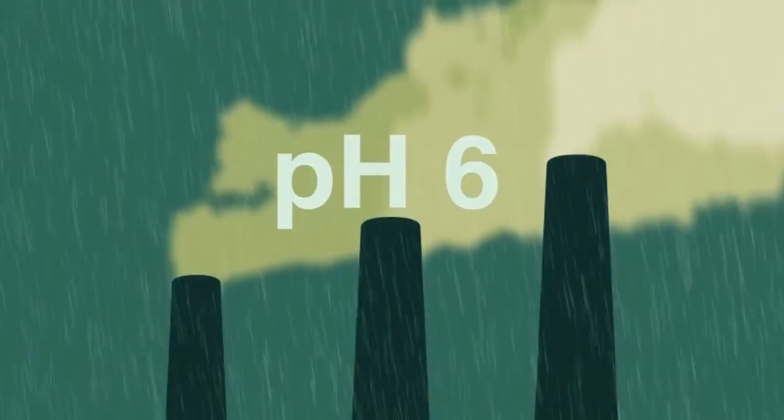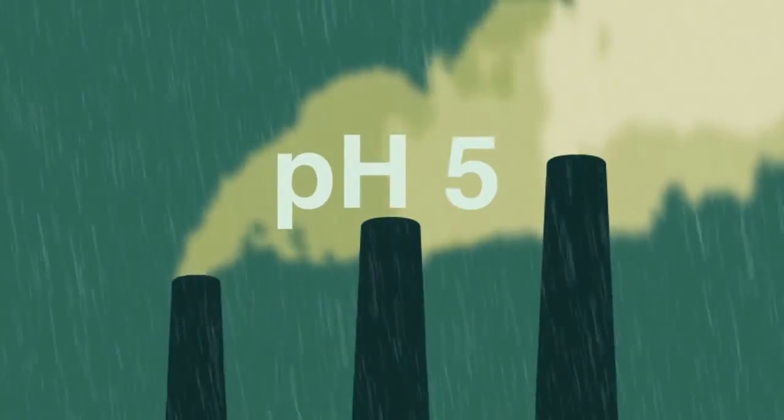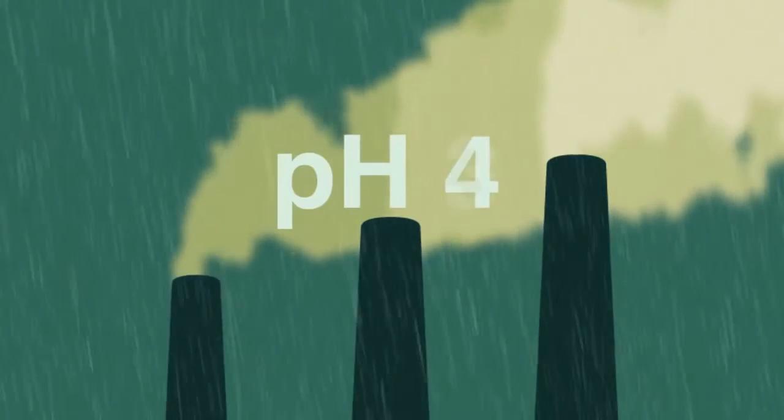It's when we burn fossil fuels that much stronger acids get into our rain, to form acid rain with a pH as low as 3.